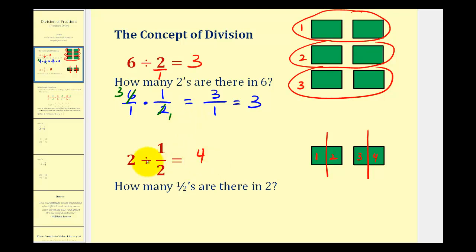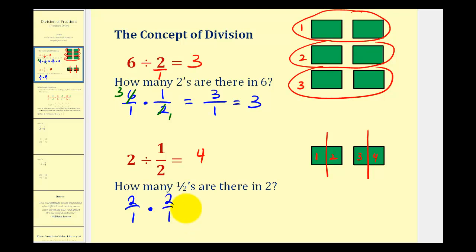But when we have division involving a fraction, we're always going to write these as multiplication problems. We do this by multiplying by the reciprocal of one-half. So we write two as two over one, change the division to multiplication, and multiply by the reciprocal of one-half, which is two over one. Notice how the result is two times two, which is four, all over one times one, which is one, giving us four.